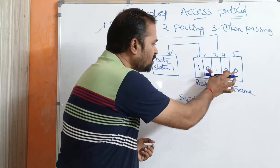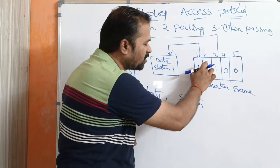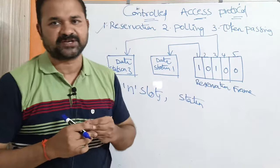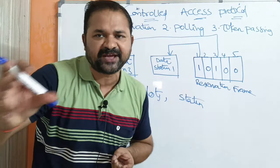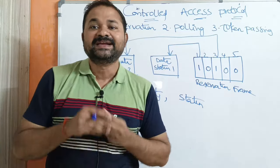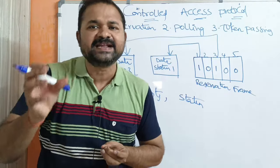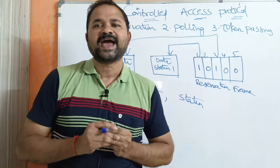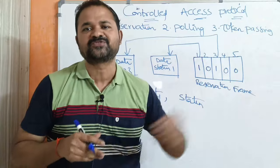Here we have five slots where the first slot represents the first station, the second slot means the second station, and likewise the fifth slot means the fifth station. If a station wants to send a frame, then before sending the frame it has to make a reservation. In order to make the reservation, the corresponding station has to transmit a bit called one in the respective slot.